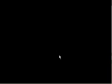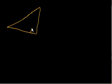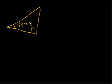Let's do another right triangle. This is my right triangle, and I know this angle right here is 0.54 radians. I also know that this side right here is 3 units long, and I want to figure out this other side.